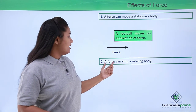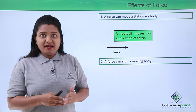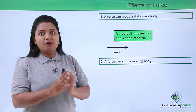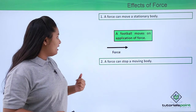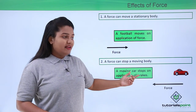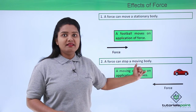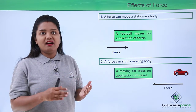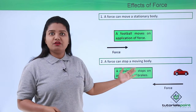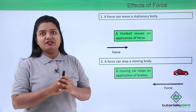The second effect of force is that a force can stop a moving body. Suppose a body is already moving and we want to stop it — we need to apply a force on it. For example, when a car is moving we apply the brakes, which apply force on the car in the opposite direction of motion, making the car eventually come to rest.